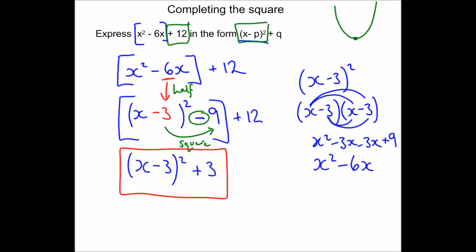The question is: what's the smallest that my bracket could be? We said it could be positive or zero, so the smallest possible value is zero, and then I add 3. That tells me that my minimum is when y is 3. We also want the x-coordinate: to make my bracket zero, x must be 3. So the minimum of this quadratic is at (3, 3).